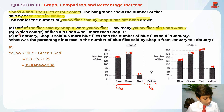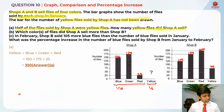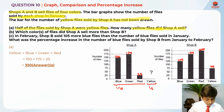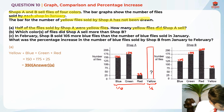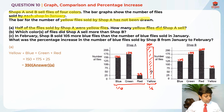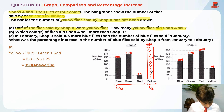Now let's read part B: which color or colors of files did shop A sell more than shop B? Let me draw in 350 for the yellow bar — it's above 200, so around here. This is the yellow files. So for part B, we need to find which colors shop A sold more than shop B.